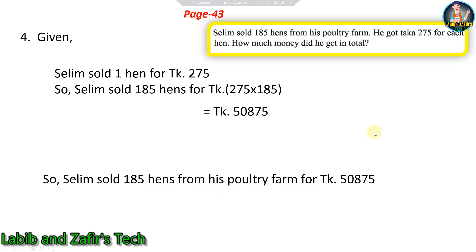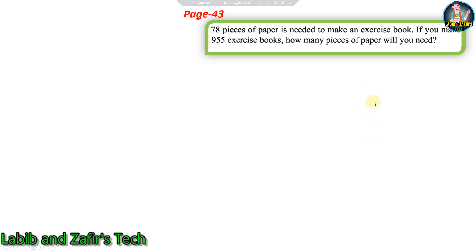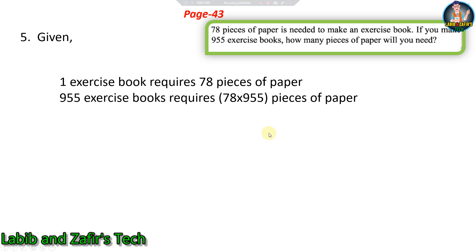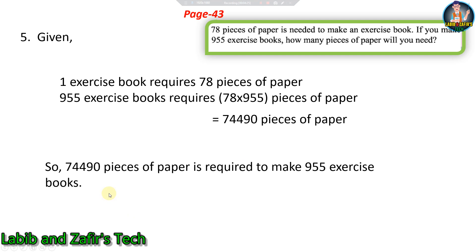Our fifth word problem from page 43: 78 pieces of paper are needed to make an exercise book, if you make 955 exercise books how many pieces of paper will you need? Given one exercise book requires 78 pieces of paper, so 955 exercise books require 78 into 955. That gives us 74,490 pieces of paper required to make 955 exercise books.